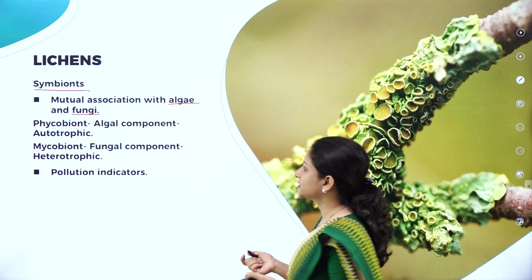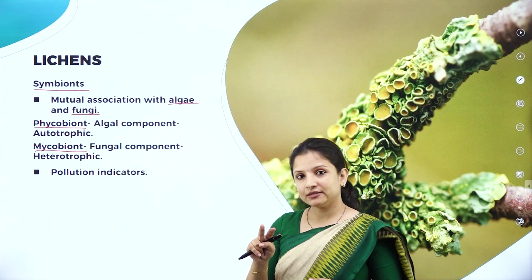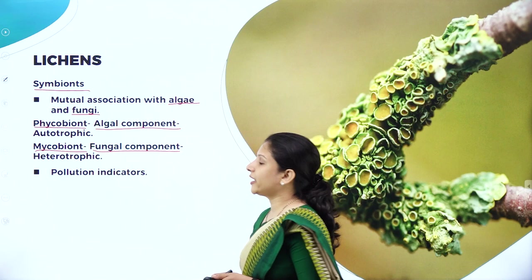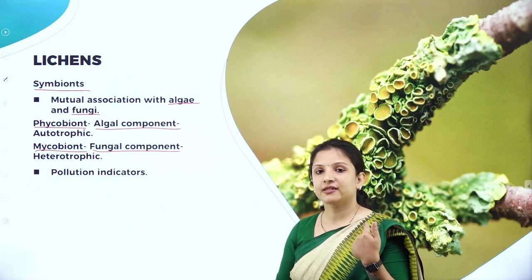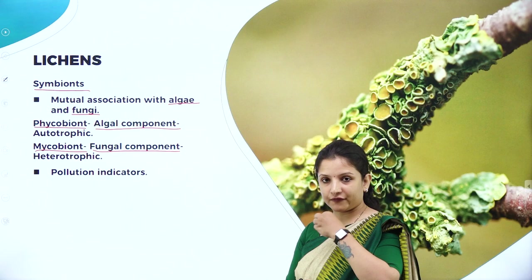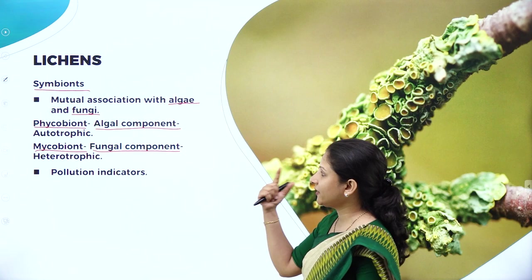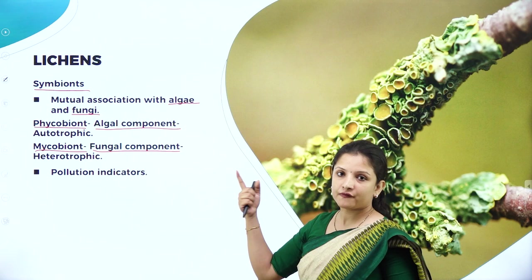Lichens have two components: the phycobiont and the mycobiont. Wherever a lichen is found, you can find both algae and fungi. If you find algae, it is called the phycobiont; if you find fungi, it is called the mycobiont. Algae is autotrophic in nature — it manufactures its own food and in turn gives the food to fungi, because fungi are heterotrophic and saprophytic. Fungi in turn make use of that food given by algae and provide shelter to algae in return. That is how lichen harbors two organisms — algae (the phycobiont component) and fungi (the mycobiont component).